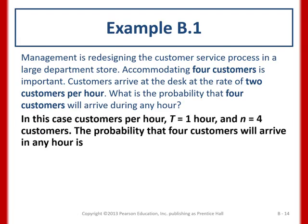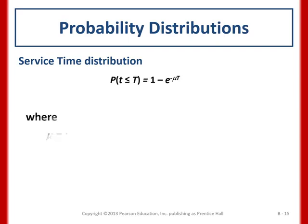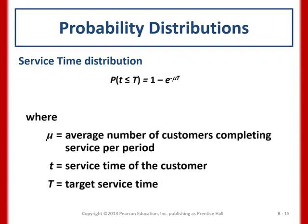Setting t = 1 hour and n = 4, we apply the formula: P(4) = (2×1)^4 / 4! × e^(−2×1) = 16/24 × e^(−2) ≈ 0.09. So there is approximately a 9% probability that exactly four customers will arrive in any given hour.